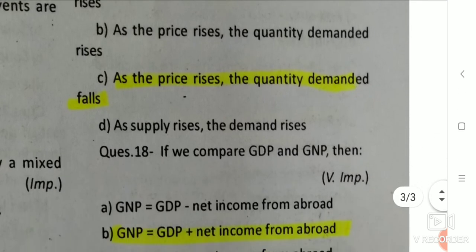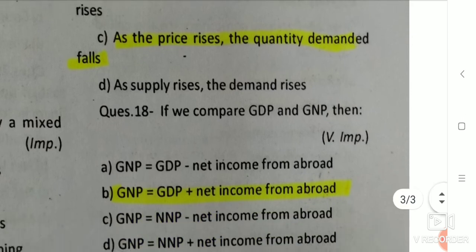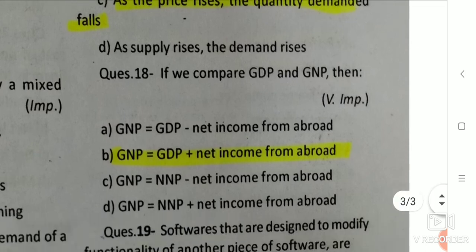Q17: If we compare GDP and GNP, then GNP is equal to GDP plus net income from abroad. GDP plus net income from abroad equals GNP.